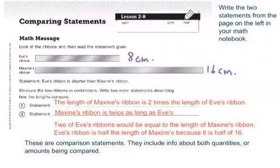So I give you four different things that you may have said. You may have said something like, the length of Maxine's ribbon is two times the length of Eve's ribbon. Or Maxine's ribbon is twice as long as Eve's. Or two of Eve's ribbons would be equal to the length of Maxine's ribbon. Or Eve's ribbon is half the length of Maxine's because 8 is half of 16. So if you had something along those lines, great. If you want to jot down those possibilities that I wrote, that would be fine as well. It does have some good language in there for you.